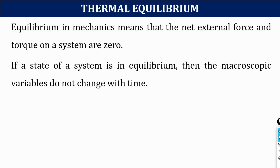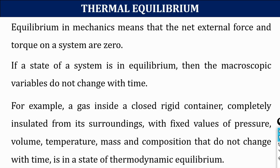If a system is in equilibrium, then the macroscopic variables do not change with time. These variables determine the state of the system — like pressure, volume, temperature, mass, and composition. When they change with respect to time, then the system is undergoing a process.